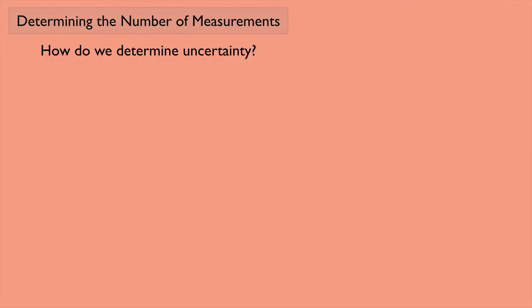So now you might be wondering, how do we determine uncertainty? So if we have a measurement like 8.32 plus or minus 0.03 meters, how do we figure out that we need a plus or minus of 0.03? And the answer is, it depends.